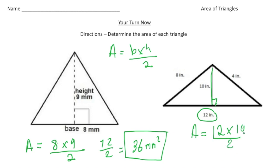And 12 times 10 is 120, divided by 2, which is going to give us 60 square inches. And there's the answer. Alright, how'd you do?